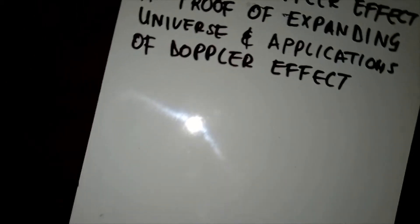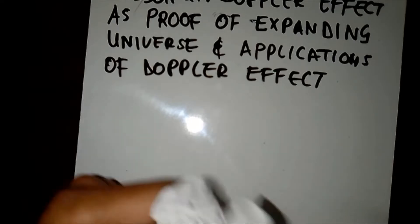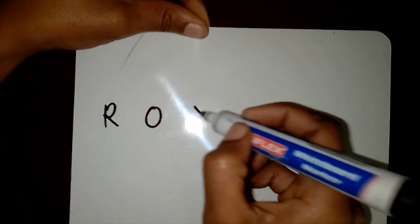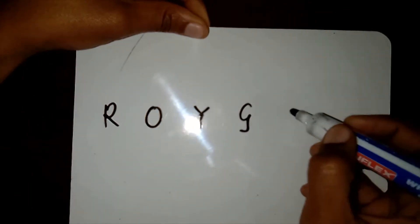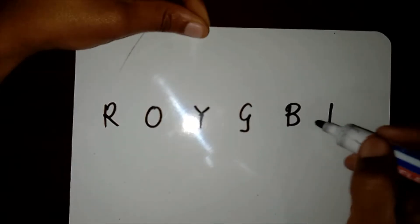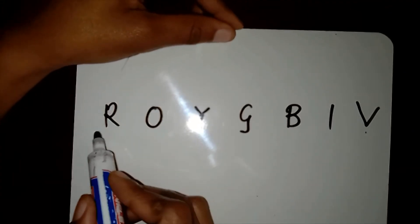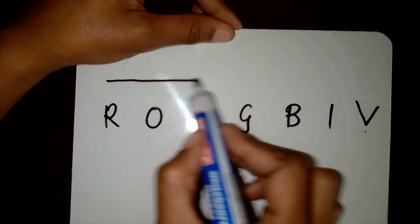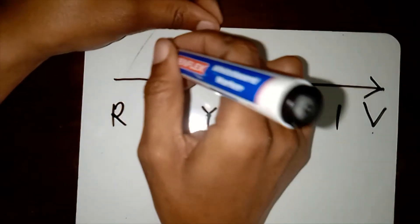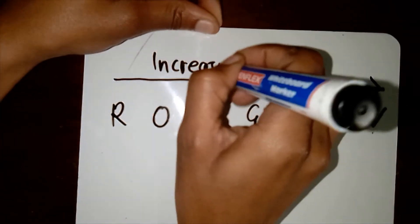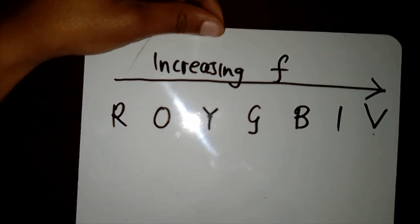To start off that discussion, let us consider the visible range of the electromagnetic spectrum. That visible range is arranged in this way: you have red light, then orange, yellow, green, blue, indigo, and at the other end of the spectrum you find violet — ROY G BIV. These colors are arranged in order of increasing frequency.